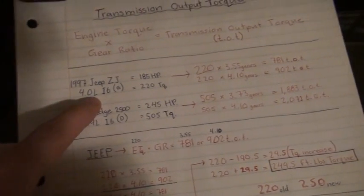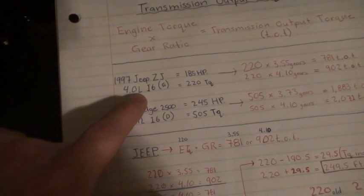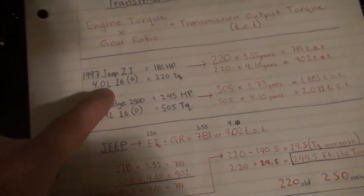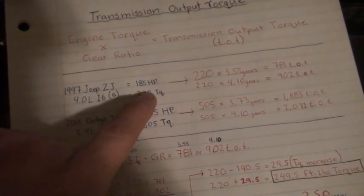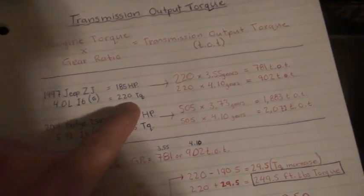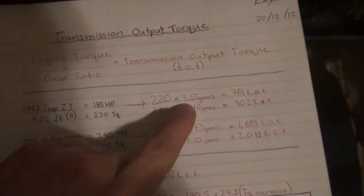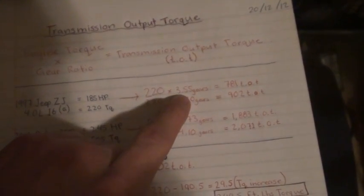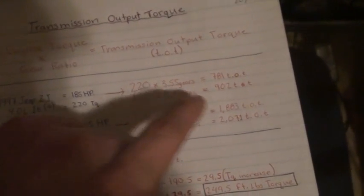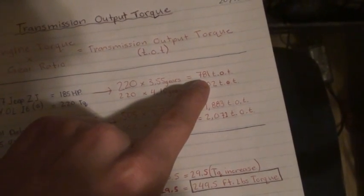We'll do the example, we'll use my Jeep. It's a 1997 ZJ, 4 liter inline 6. It comes with 185 horsepower and 220 foot-pounds of torque. Now, stick that equation in, it's 220 times 3.55 because that's the gearing it comes with from the factory. That equals 781 TOT.